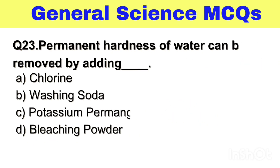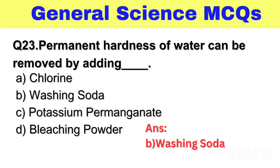Question No. 23. Permanent hardness of water can be removed by adding — Option A. Chlorine, B. Washing Soda, C. Potassium Permanganate, D. Bleaching Powder. Right answer, Option B. Washing Soda.